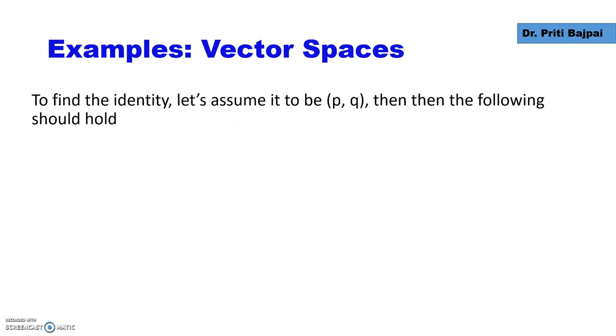Identity in this case has to be found. It will not be (0,0). What is the role of identity? If we add the identity to the vector, it should give us the point back, the vector back. Let's say we take our identity to be (p,q). So when we add (x,y) to (p,q), we should get (x,y) back.